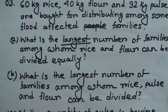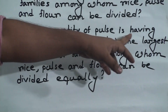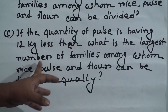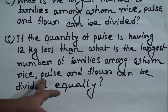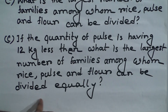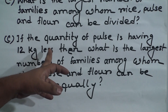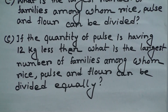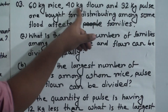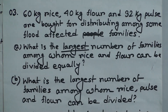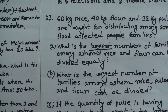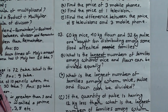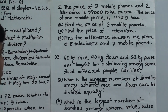(c) If the quantity of pulse is 12 kg less, what is the largest number of families among whom rice, pulse, and flour can be divided equally? Subtract 12 kg from 32 kg to get 20 kg. Then find the GCF of 60, 40, and 20 to get the required answer. You must solve question numbers two and three as required.